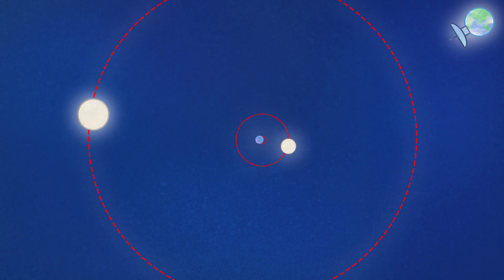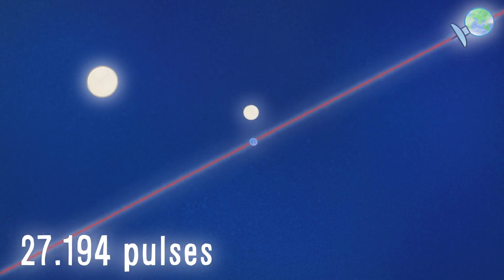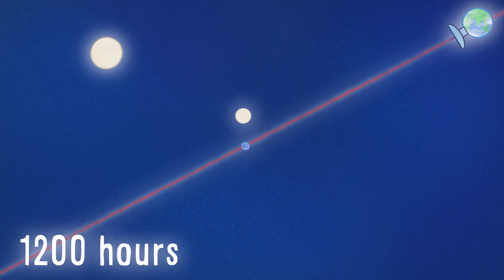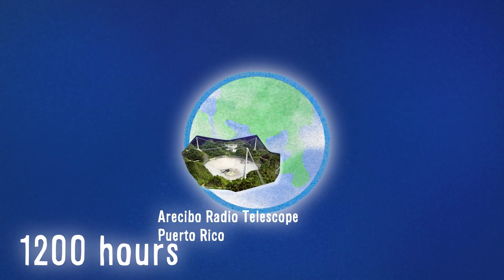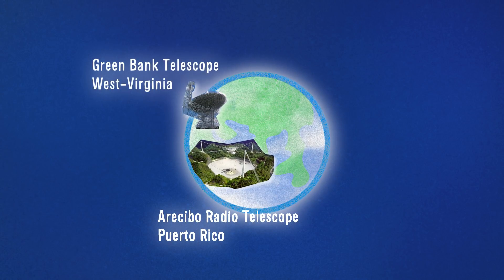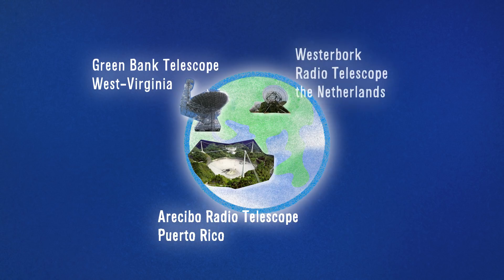So we measured the arrival times of 27,194 of these pulses to the nearest microsecond. We recorded over 1,200 hours of observation spanning six years, using three radio telescopes: the Arecibo Radio Telescope in Puerto Rico, the Green Bank Telescope in West Virginia, and the Westerbork Radio Telescope in the Netherlands.